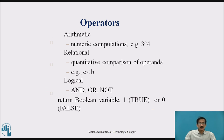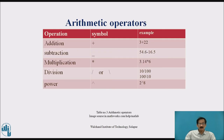Operators: arithmetic operators perform numerical computation — for example, 3 raised to the power 4. Relational operators perform quantitative comparison of operands — for example, c less than b or c greater than b. Logical operators such as AND, OR, NOT return a Boolean variable: 1 if the condition is true, 0 if the condition is false. Regular arithmetic operations are addition, subtraction, multiplication, division, and power. For example, 3 plus 22; symbols are similar to regular mathematics. Power example: 2 to the power of 8.